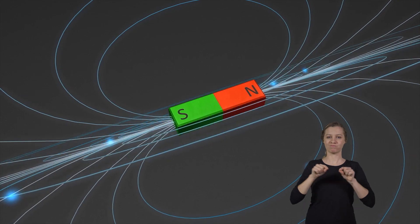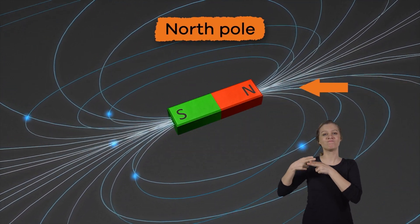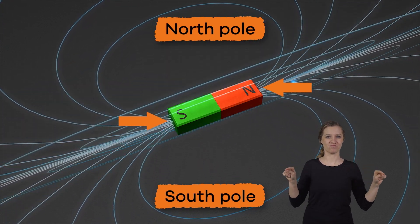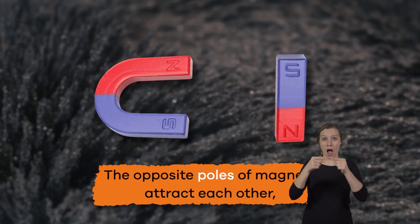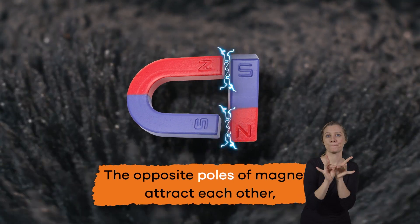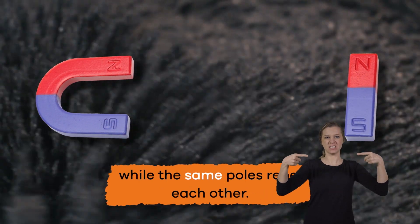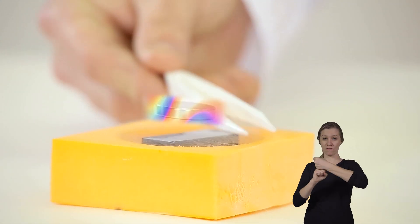Magnets have two ends or poles. One end is called the north pole and the other is called the south pole. The opposite poles of magnets attract each other, while the same poles repel each other.